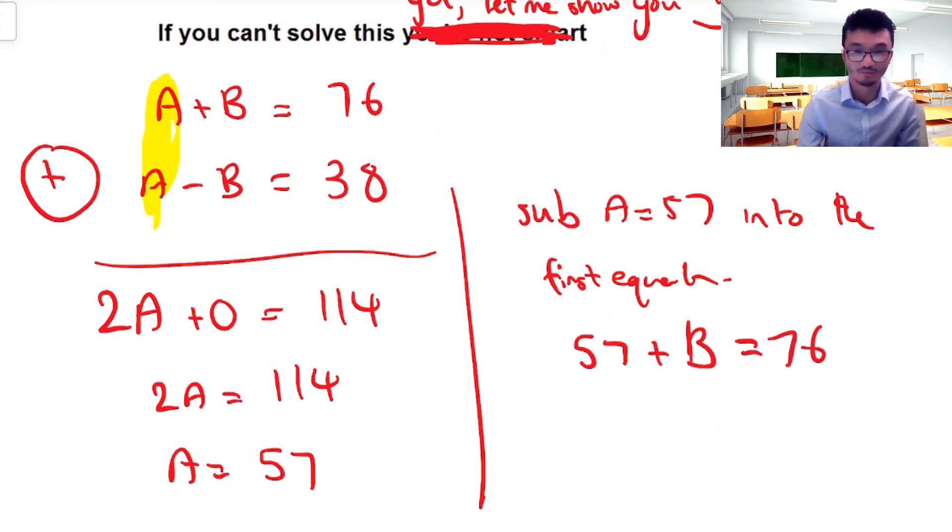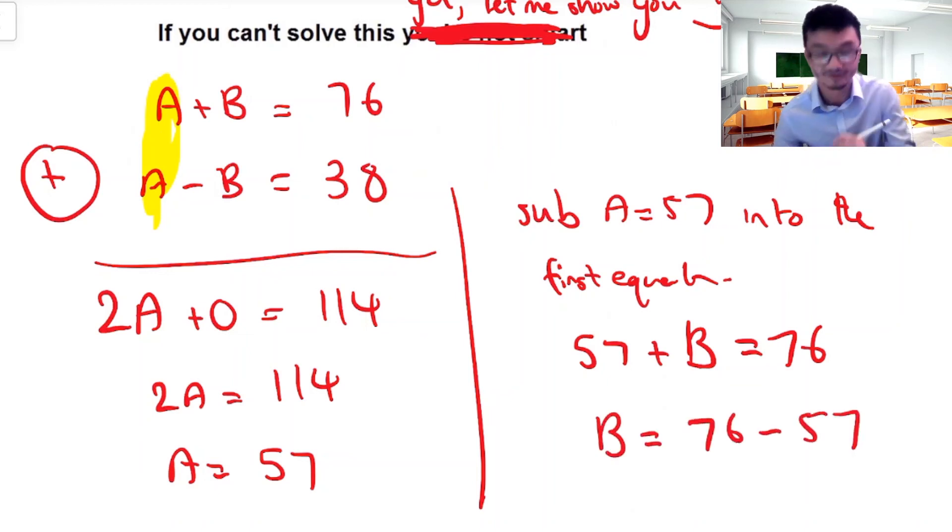And if I want to work out what B is, I want to get B by itself. I want to think about like something plus 57 gives me 76. So basically what you're doing is 76 minus 57 to work that out. And when you do that, you're going to get 19. And that's how we could get these two variables.